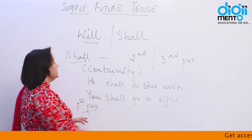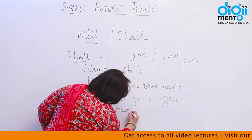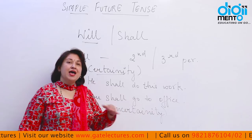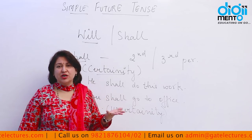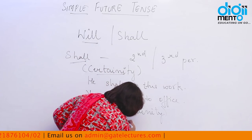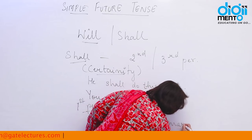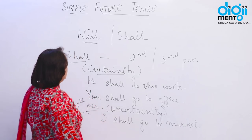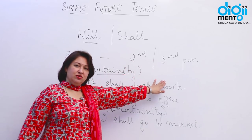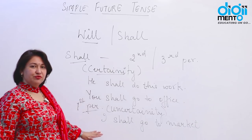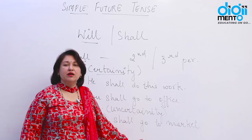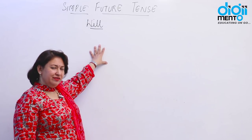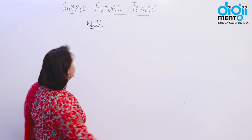Whereas when we use 'shall' with the first person — 'I shall go to market' — it does not show certainty. So with the second and third person, 'shall' shows certainty, whereas in case of the first person it does not show certainty.